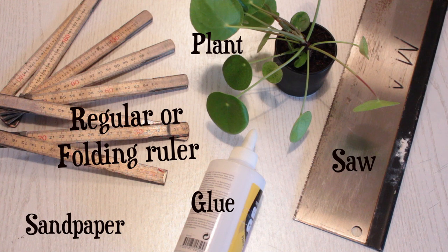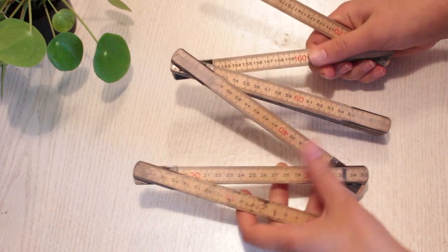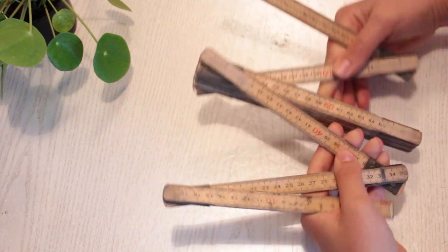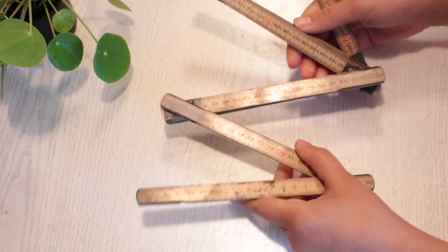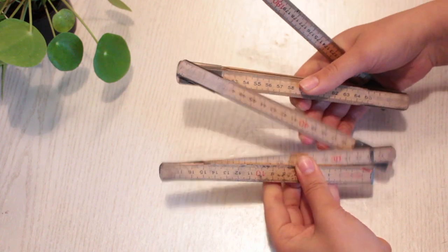Here's what you need to create this planter. You need to take the folding ruler and just separate the whole thing. But if you have a regular wooden ruler, just skip this part.